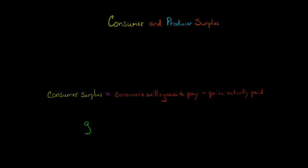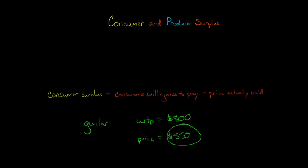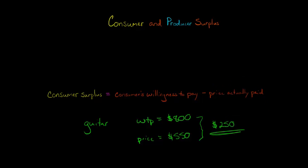So let's say that you play the guitar and you find a guitar on eBay that you really want, and you'd be willing to pay up to $800 for this guitar. But in the auction, you end up actually getting the guitar for $550. You would have paid up to $800 but it only got bid up to $550. Subtracting $550 from $800 gives us $250, so you have $250 of consumer surplus — your benefit exceeded the price you paid by $250.